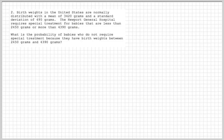So this problem here is about baby's weights. It's normally distributed. We have a mean of 3420 grams and a standard deviation of 495 grams. Apparently, there is special treatment for babies that weigh less than 2450 grams or more than 4390 grams.